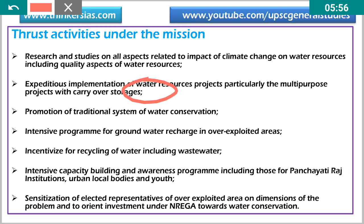The fourth activity is an intensive program for groundwater recharge in over-extracted areas. Recharge can be done through raising the bunds of agricultural land borders so that rainwater percolates deep into the ground, and through borehole recharge and digging of soak pits, which enable percolation of water during the rainy season.